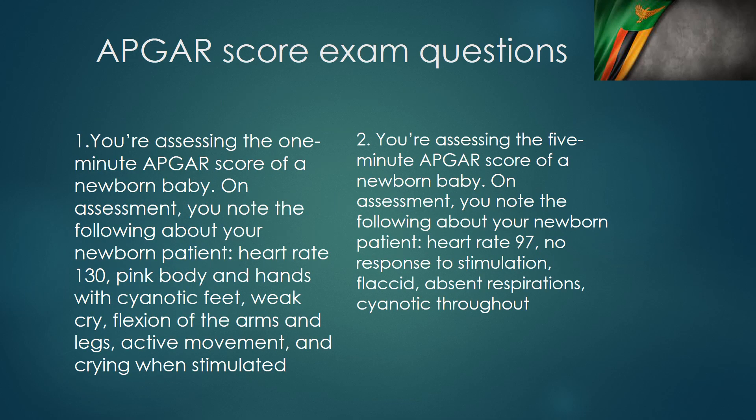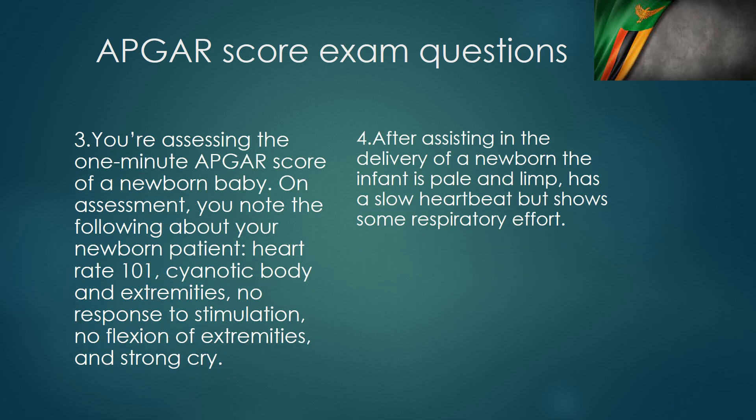Finally, here are some practice questions. I've put up four questions for you to try and calculate the APGAR score. Remember we are using the color of the baby, the heart rate, the arousability of the baby, the respirations, and the M which is muscle tone to try and get an APGAR score for these babies. Thank you so much for listening and we will see you in the next video.